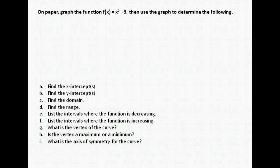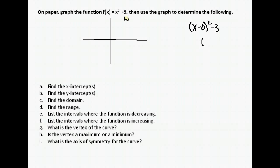We want to graph this function on paper and then answer the following parts. When we studied transformations, we have just plain x squared — notice there's no extra x anywhere — minus 3. This is in vertex form. This is basically the parabola x squared moved down three units. Our vertex is in the correct form, so let me just add a portion for our H and our K. This is in standard form.